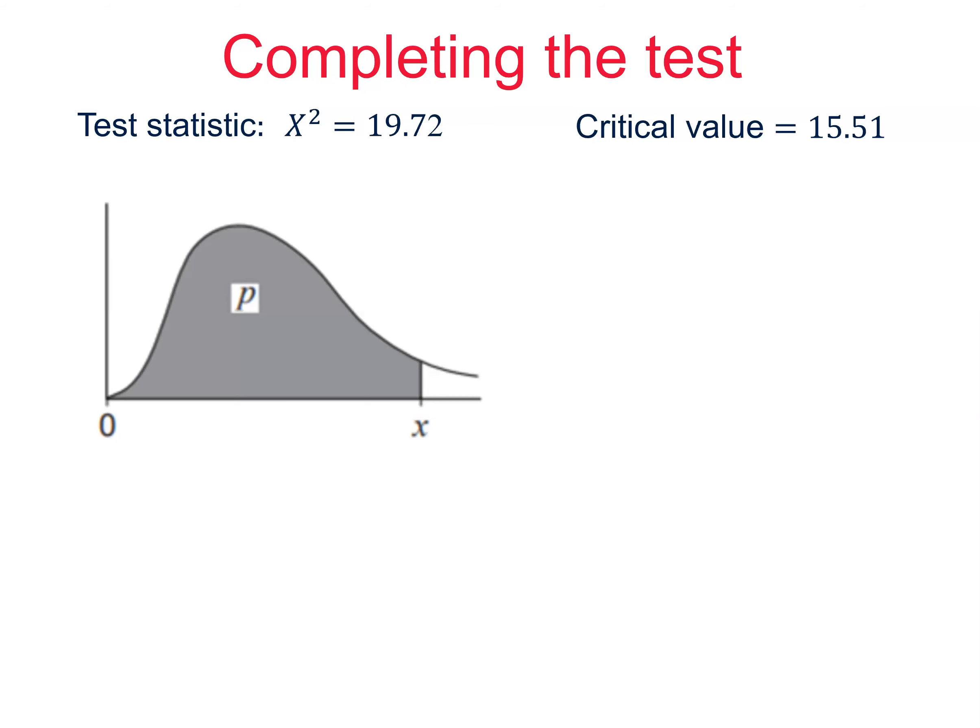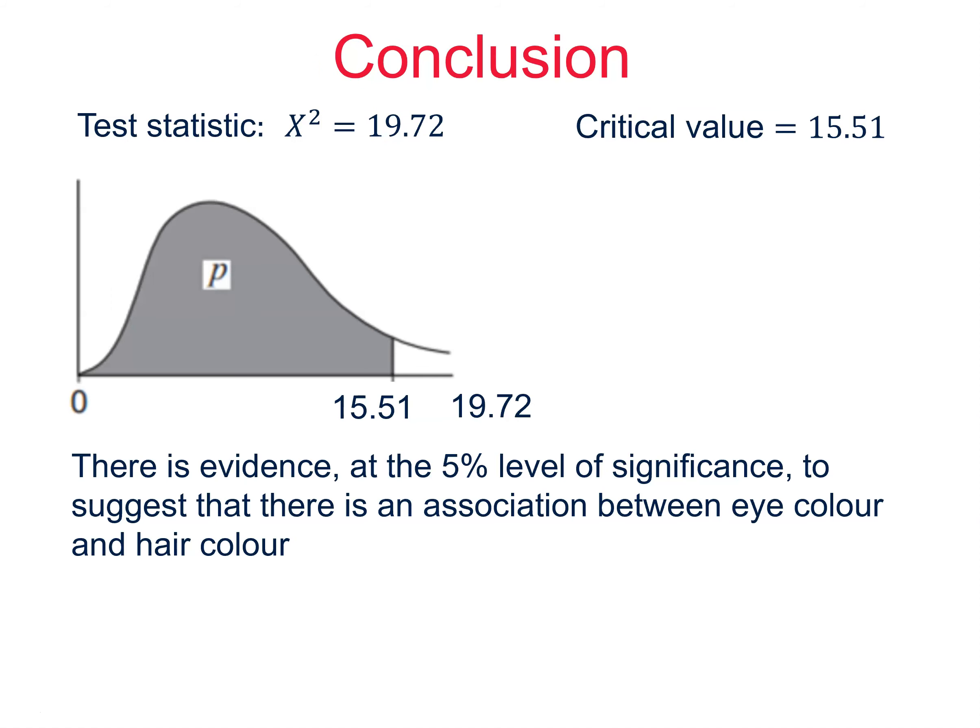So, now we have our critical value, we can compare it with our test statistic. x squared is bigger than the critical value, so to the right of the shaded area. It's in that 5% area quite unlikely to happen by chance. We are going to reject the null hypothesis. And we write our conclusion carefully in context, in the usual way. There is evidence at the 5% level of significance to suggest that there is an association between eye colour and hair colour.